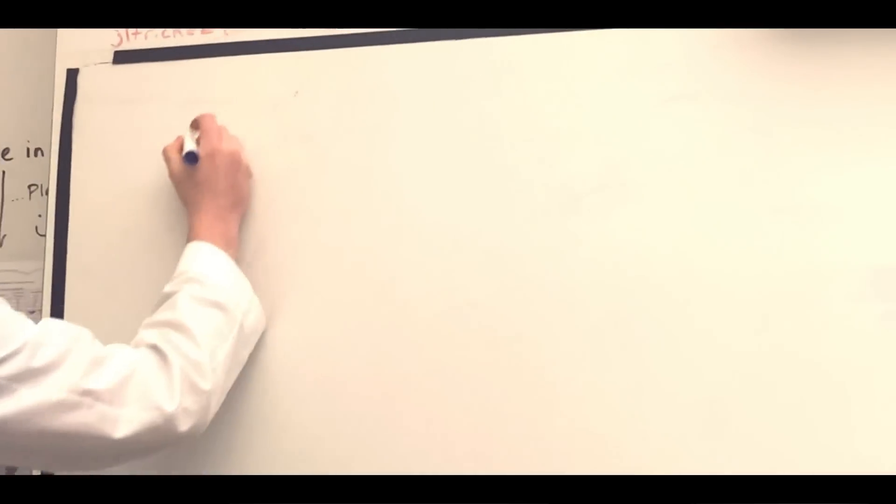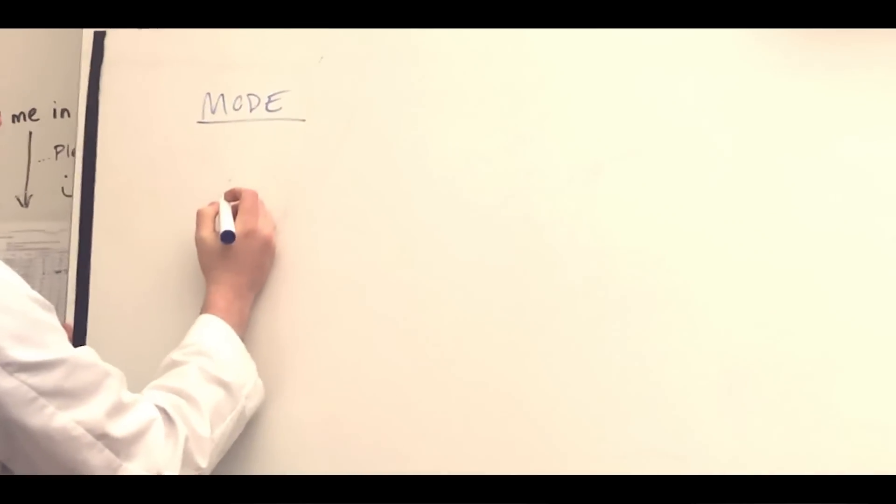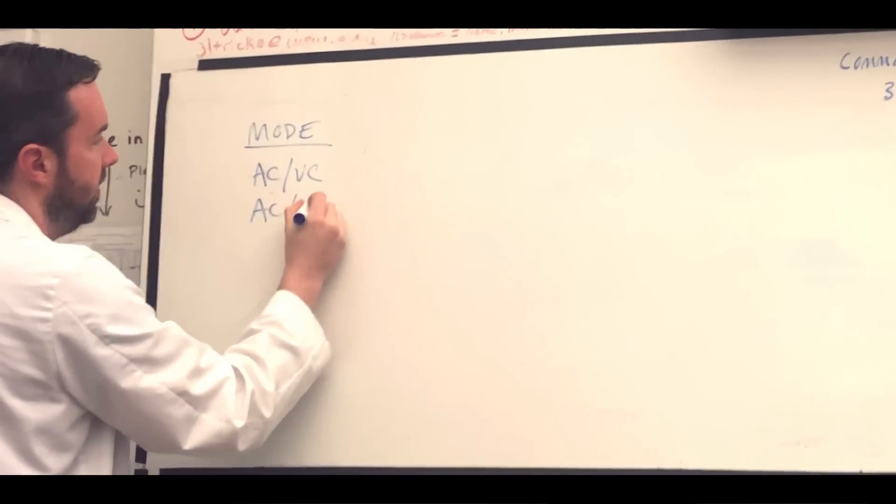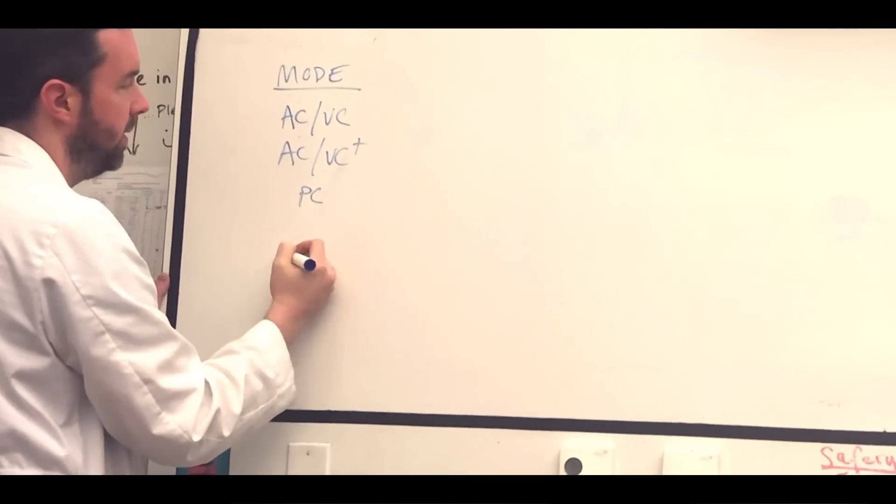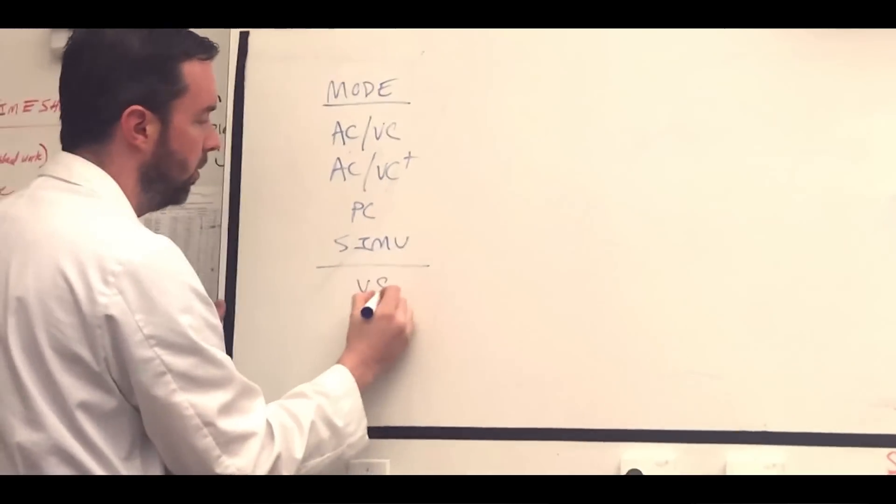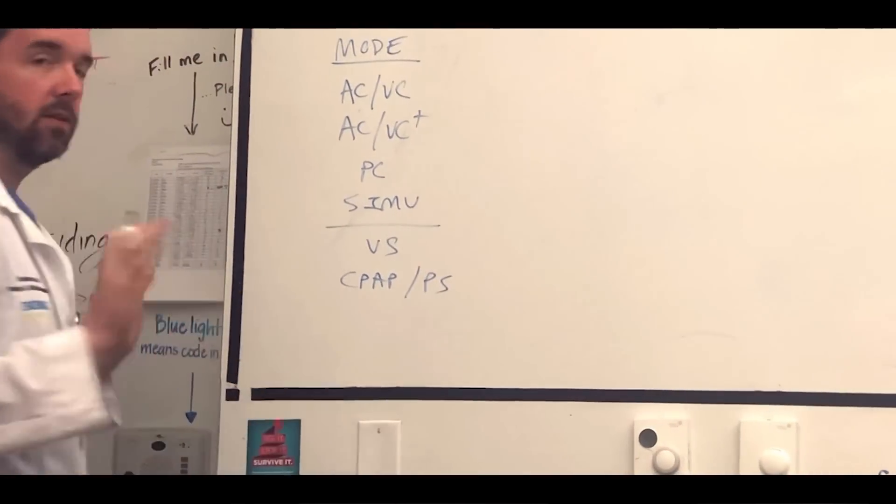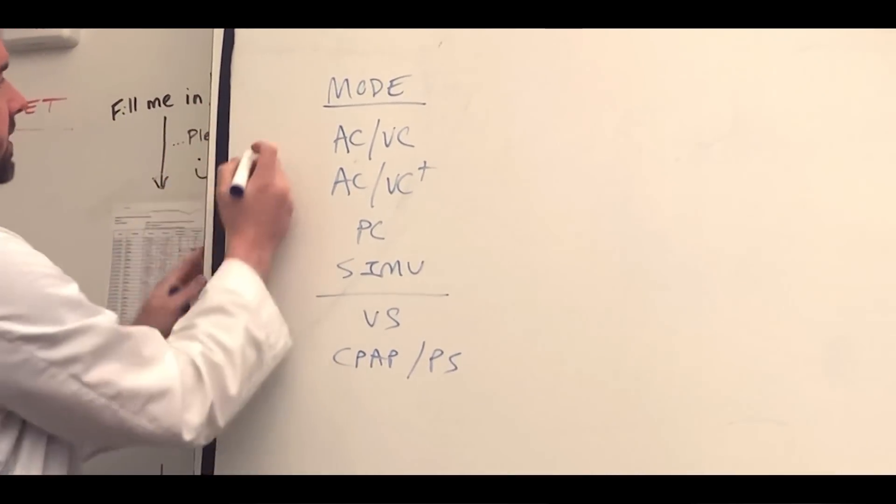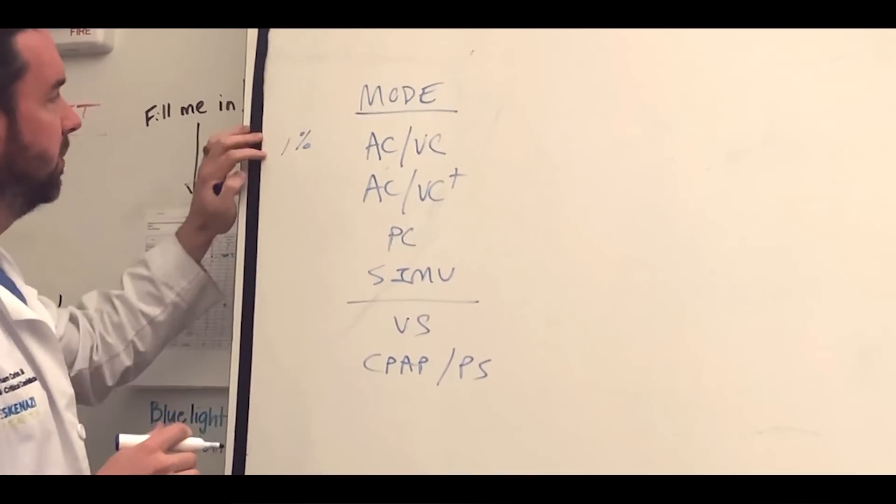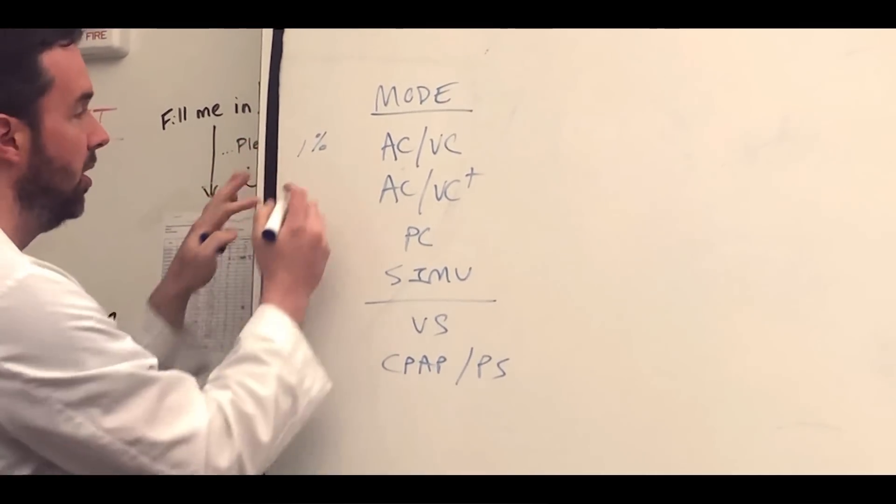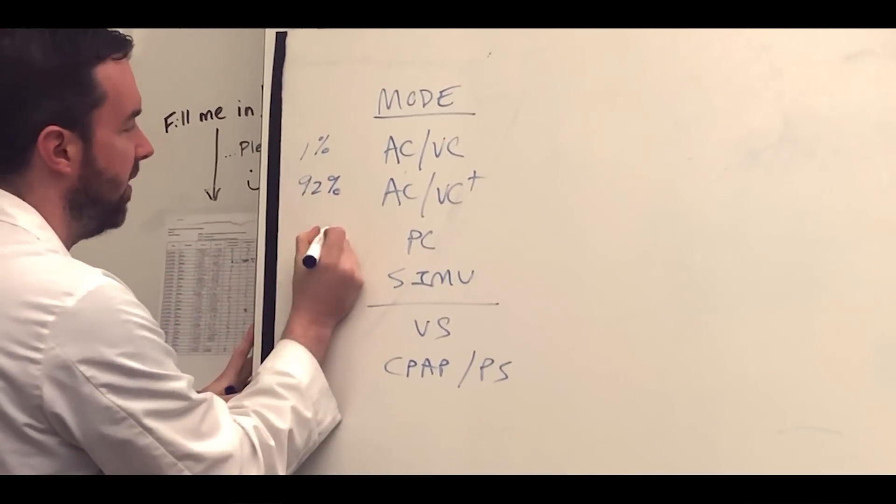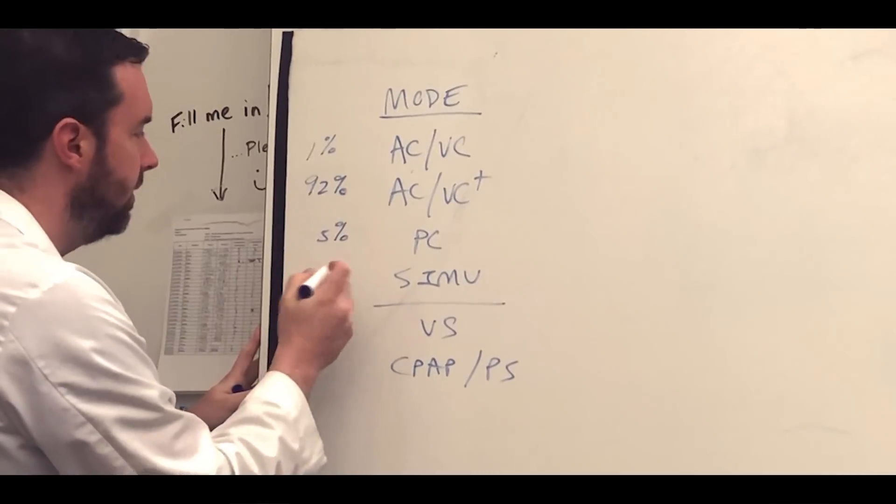So we're going to go to ACVC, ACVC plus pressure control or ACPC, SIMV we'll touch on briefly. Then we're going to do volume support, CPAP pressure support. To give context over here, we use ACVC, and this may vary from hospital to hospital around the country, but here for the most part of our hospitals, we only use ACVC about one percent of the time. We use ACVC plus like 92% of the time. I'm just pulling these numbers out. We use pressure control maybe about five percent of the time, and SIMV one to two percent of the time.